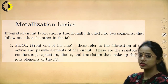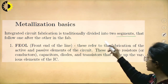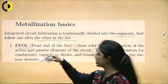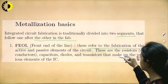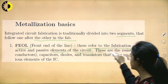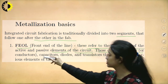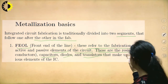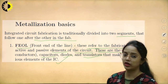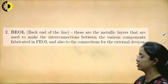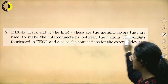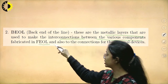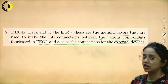Integrated circuit fabrication is traditionally divided into two segments. The first is the front end of the line, which refers to the fabrication of active and passive elements — resistors, capacitors, diodes, and transistors — that make up the various components of the IC. The second is the back end of the line: the metallic layers used to make interconnections between the various components fabricated in the front end, as well as connections to external devices.